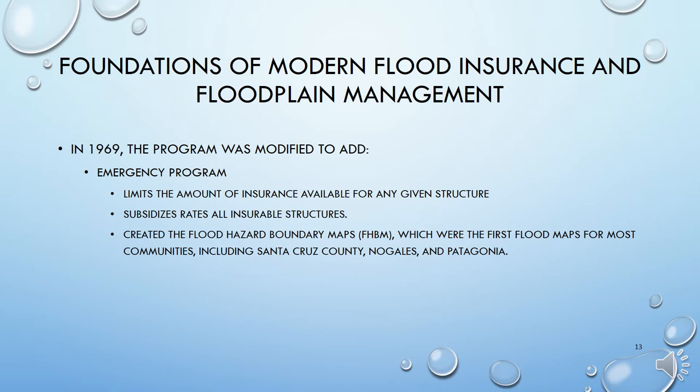In 1969, the program was modified to add an emergency program, which limited the amount of insurance available for a given structure. It also subsidized the rates for all insurable structures, not just pre-existing structures. It also created the flood hazard boundary maps, or FHBMs, which were actually the first maps for most communities including Santa Cruz County, Nogales, and Patagonia. These were the original maps drawn on the 1948 series 15-minute quadrangles — one inch on the map represented one mile on the ground, so they were very rough maps.